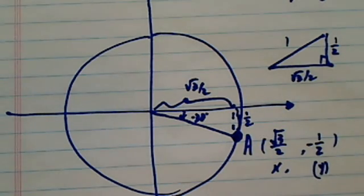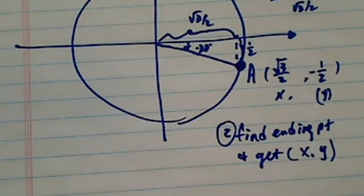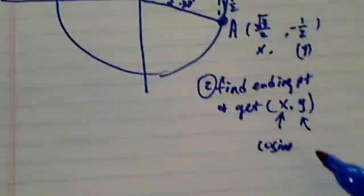Step one, you find the angle. Step two is you'll find the ending point and get x-y pair for that ending point. X is always your cosine value, and then y is always your sine value.